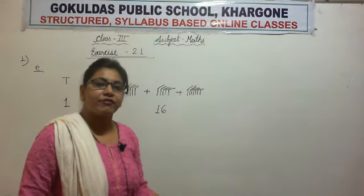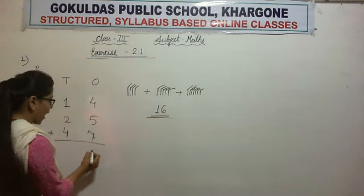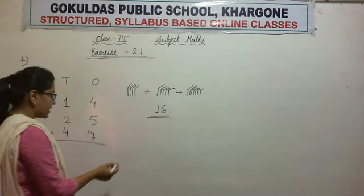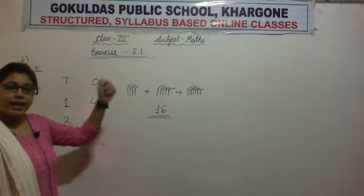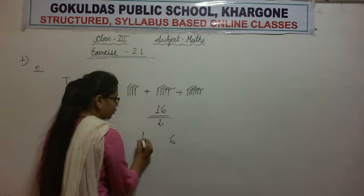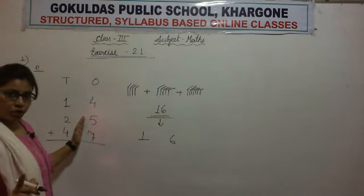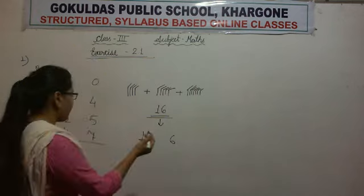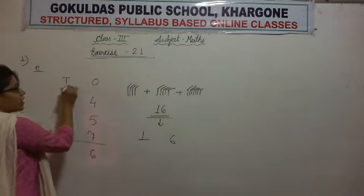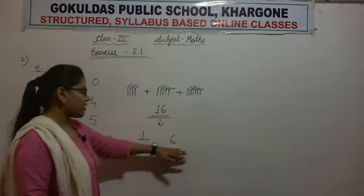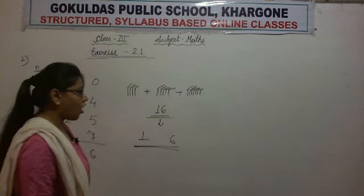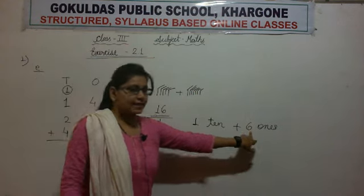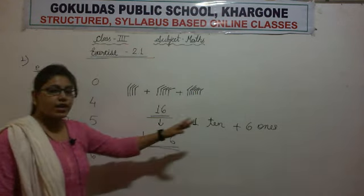As we learnt in our previous lecture, whenever we get a 2-digit answer, we write 1 digit in the 1's column and the next digit in the next column. We are dividing 16 into 2 groups — this process is called regrouping. We write 6 in the 1's group and carry 1 to the 10's column. In 16, there is 1 ten and 6 ones, so we write 6 in the 1's column and 1 in the 10's column.